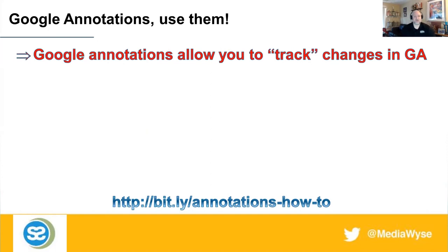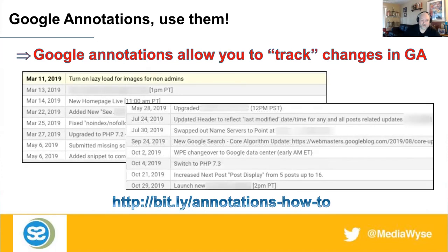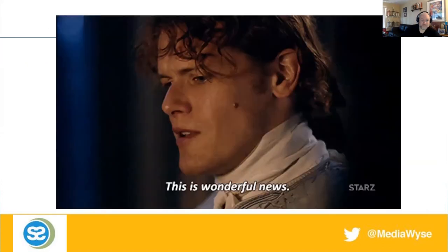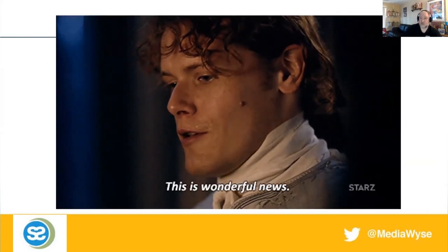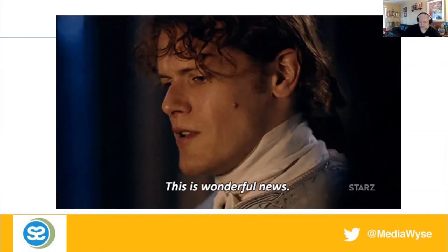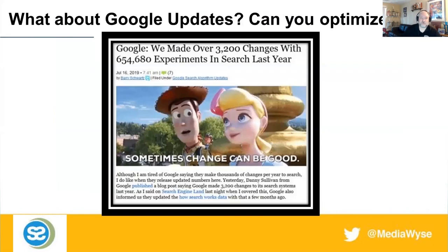A quick way to track changes is to use Google Annotations. It's amazing how many people don't know that Google Annotations exists. Whenever we make changes to our site, we use annotations to provide a history of those changes in case we notice traffic drops or something's going on. We can go back, look at the notes, and find out where possible mistakes were made. Google performs a lot of updates — over 3,200 changes a year in search. That number is substantially higher in 2020. All we have is Google's declarations about this; otherwise we just have to guess.